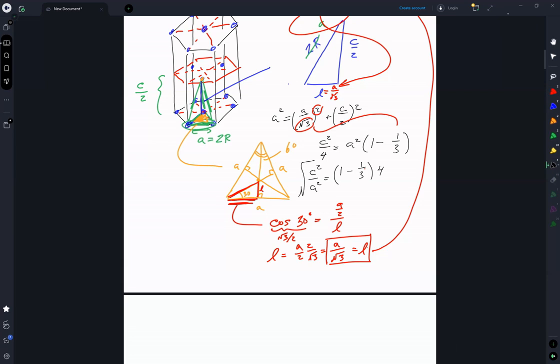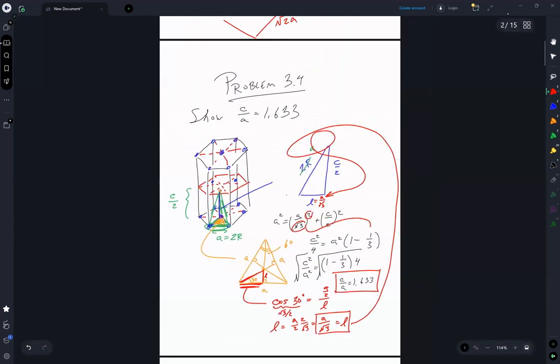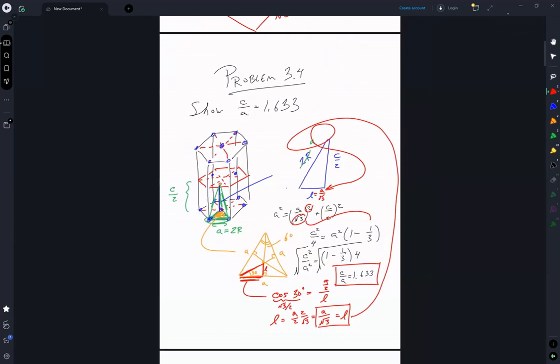And then taking the square root of both sides, we get C over A is equal to 1.633. So that's looking at the HCP C over A ratio.